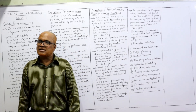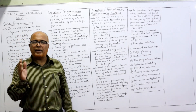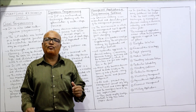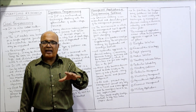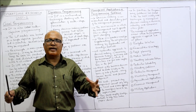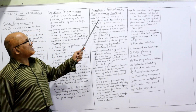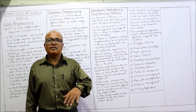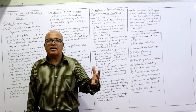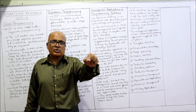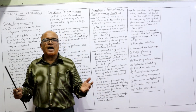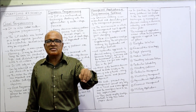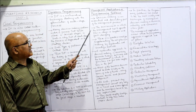Having explained goal programming, dynamic programming, linear programming, and integer programming, the last topic of this video is managerial applications of programming problems. Programming problems have become a vital input for decision-making at the management level. Decision making is an essential and dominating part of management — the main function of management is choosing among alternatives, and that is called decision making.